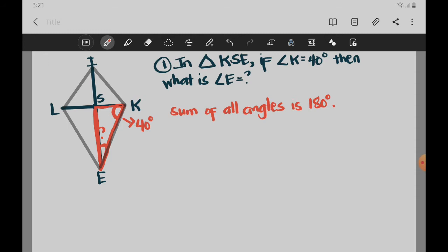So if we are going to add angle K plus angle S plus angle E, we know that they equal 180 degrees. Now, the given is angle K, which is 40 degrees. Let's substitute that.